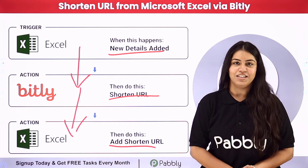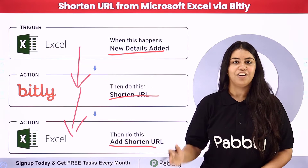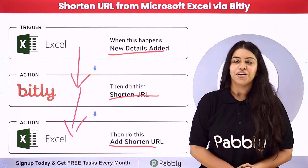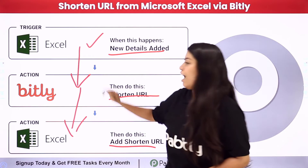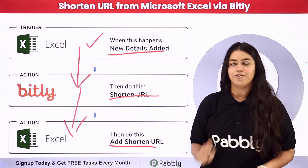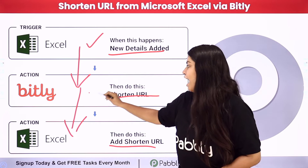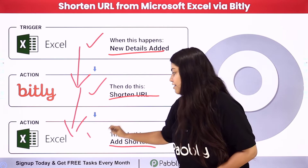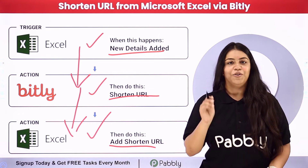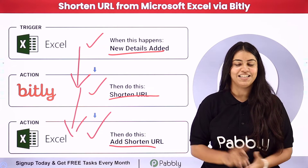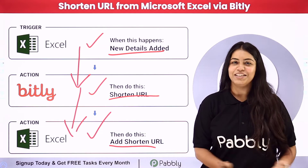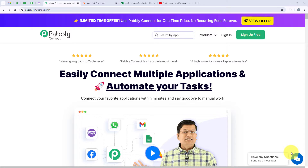In Pabbly we have the concept of Trigger and Action. For the Trigger we are going to use Microsoft Excel, and for the Action we are using Bitly and Microsoft Excel. If you also want to learn this process step by step, follow me through the screen.